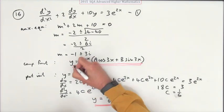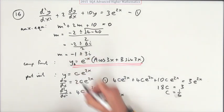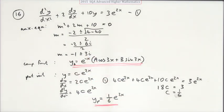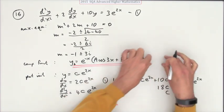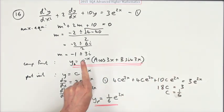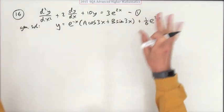Let's just put that in there. That was the complementary function, that was a particular integral. Now you've just got to stick them together for the general solution.